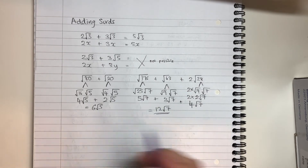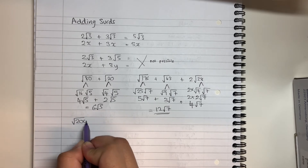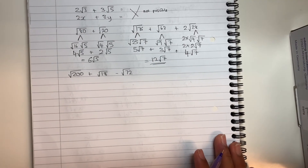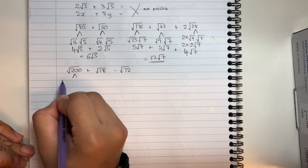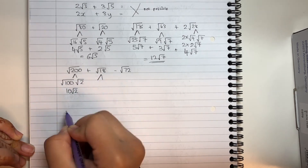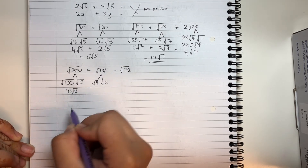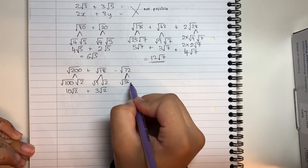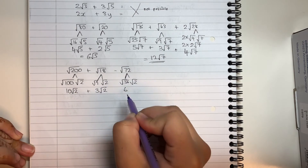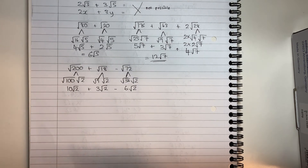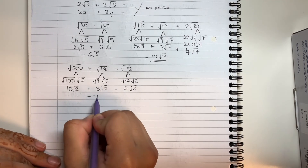Now I'm going to give you two examples to have a go at yourself — pause while you try. Root 200 plus root 18 subtract root 72. The biggest square number into 200 is 100, giving 10 root 2. The biggest square number into 18 is 9, giving 3 root 2. The biggest square number into 72 is 36, giving 6 root 2. So 10 plus 3 minus 6: 10 plus 3 gives 13, and 13 take away 6 gives 7. The final answer is 7 root 2.